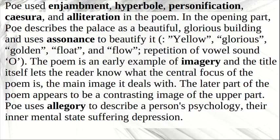Poe used enjambment, hyperbole, personification, caesura, and alliteration in the poem. In the opening part, Poe describes the palace as a beautiful, glorious building and uses assonance to beautify it — yellow, glorious, golden, float and flow.